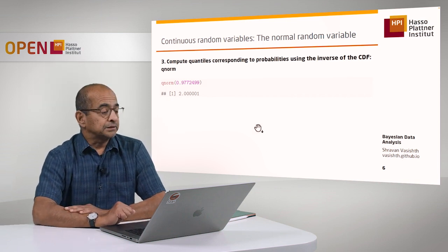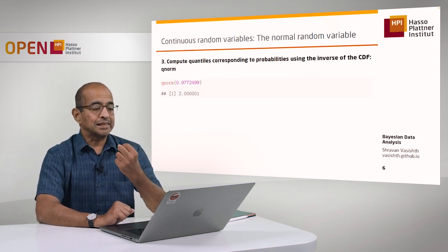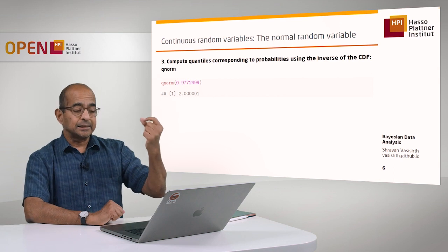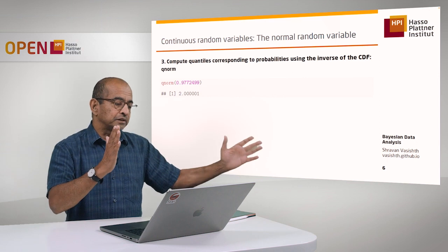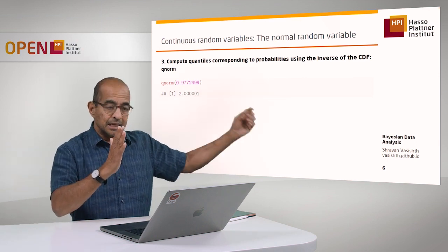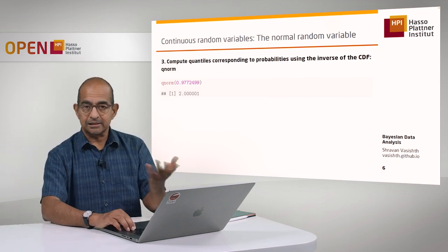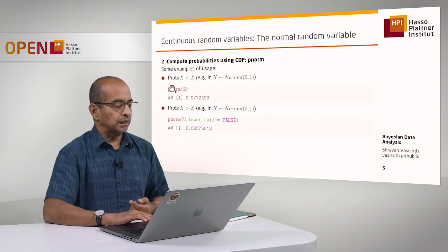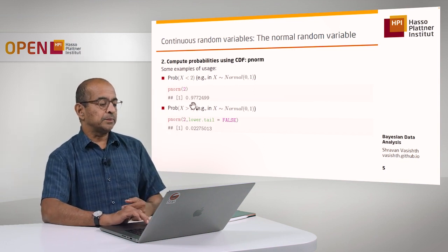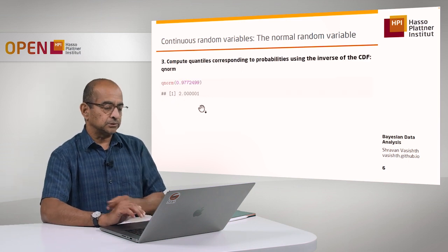Another important function is the qnorm function, which is the inverse of the CDF. You can ask: what is the quantile Q such that the area under the curve to the left of it is 0.977? The qnorm function gives you that quantile. In this case it's approximately 2 — I plugged in 2 and got probability 0.977, and now I plug that probability into qnorm and get back approximately 2.